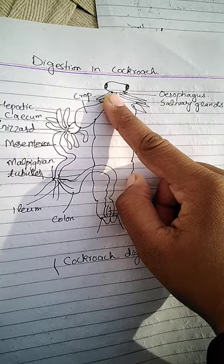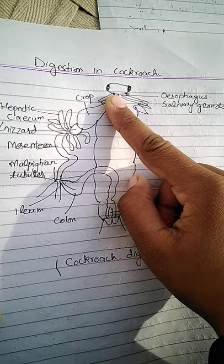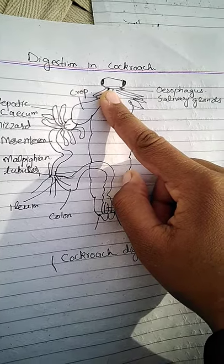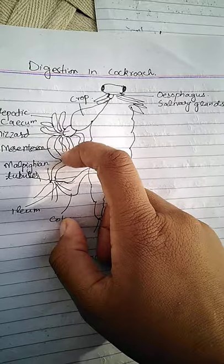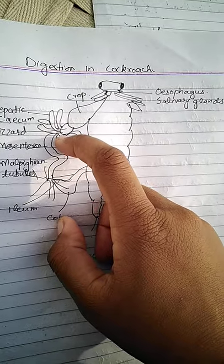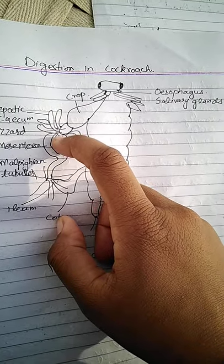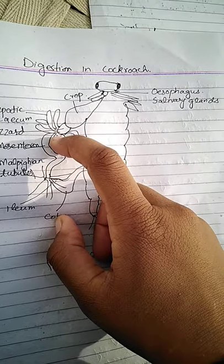The midgut is a short and narrow tubule called the mesentron.